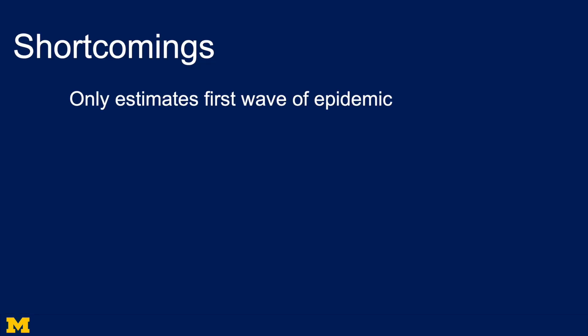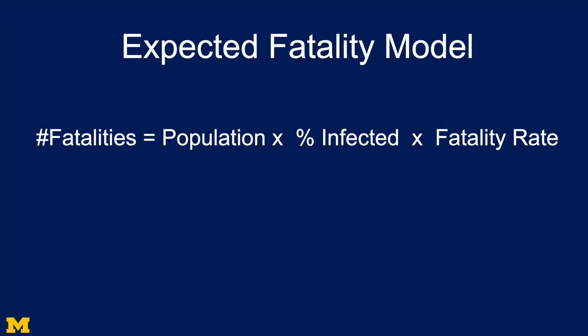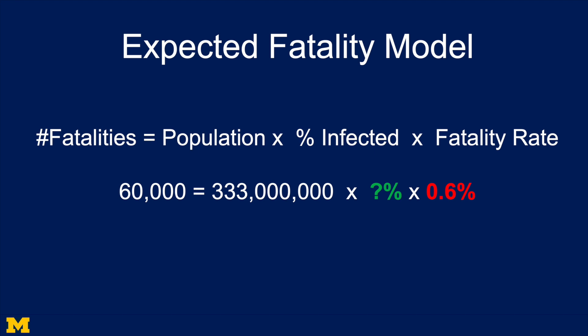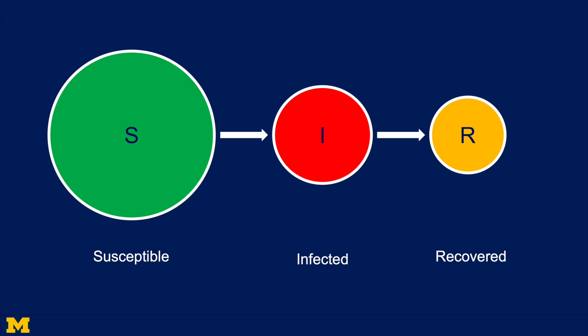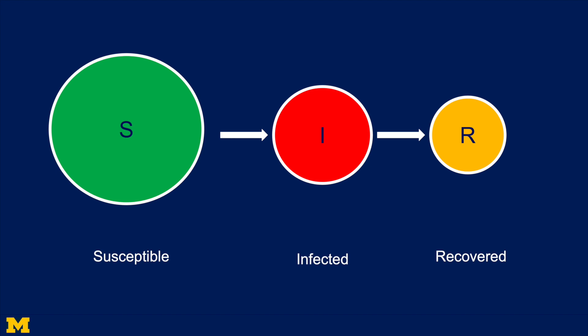Are there shortcomings? The first is that this model is only estimating the first wave of the epidemic, and this is why we need a many model approach. The expected fatality model tells us fatalities equals population times percent infected times the fatality rate. With 60,000 fatalities in a population of 333 million and a fatality rate of 0.6%, the percent infected is only about 3–5% — a very small percentage. The SIR model tells us that susceptible people become infected then recover. If only 4–5% of the population has had the disease, there's still a huge set of susceptible people, and we're absolutely going to get a second wave. Each wave should be smaller than the previous one as we push down the susceptible pool.